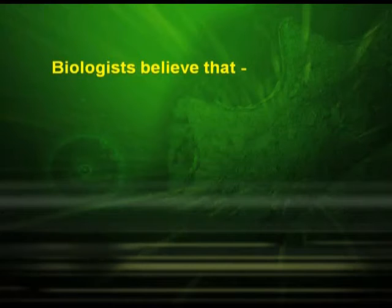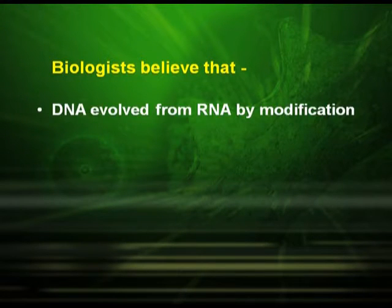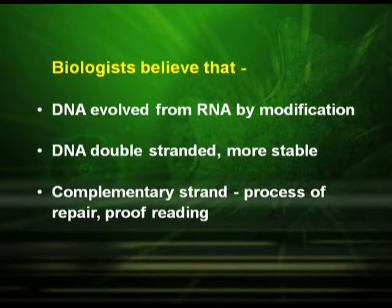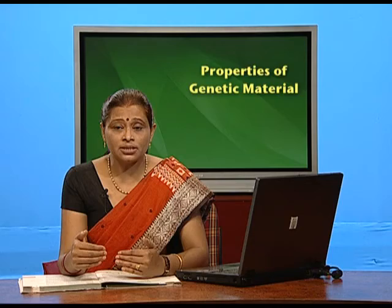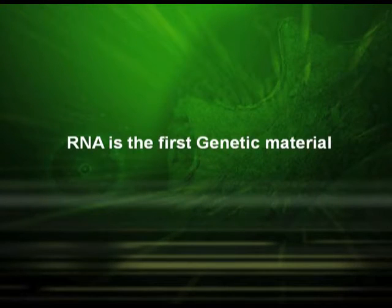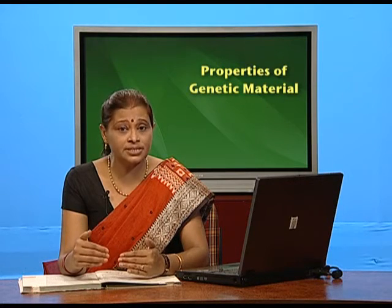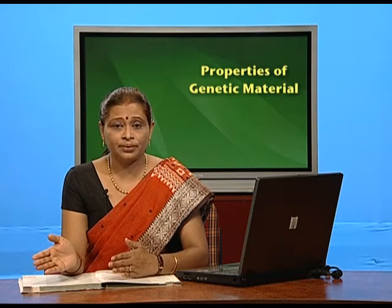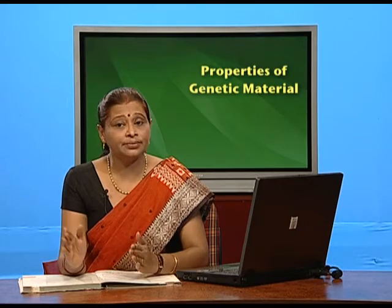Looking into all these features of RNA, biologists think that DNA evolved from RNA by modification. DNA is double stranded, it is more stable, it has complementary strands and an inbuilt process of repair called proofreading. All these evidences show that RNA is the first genetic material — RNA appeared first and by modification gave rise to DNA, because DNA is more stable than RNA.